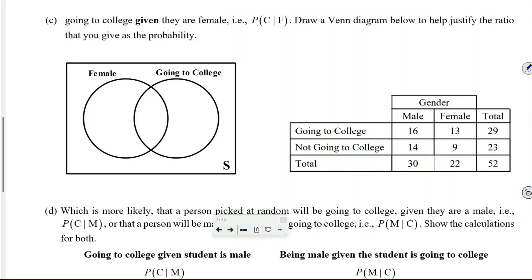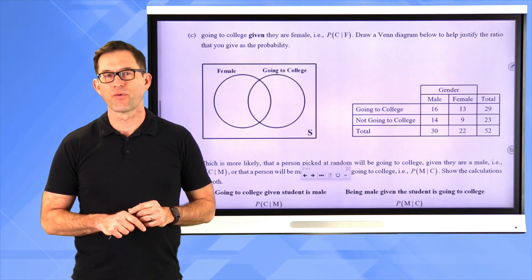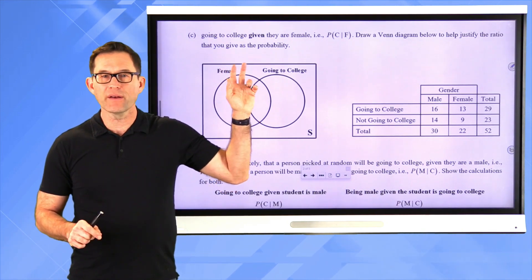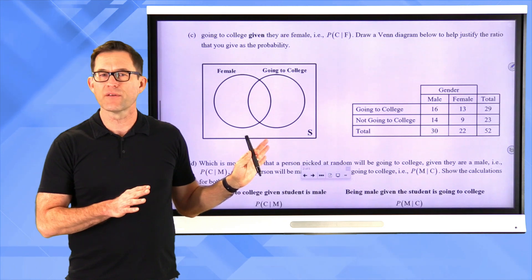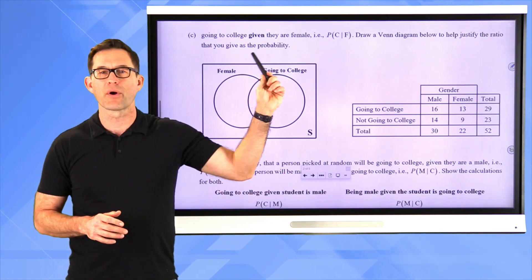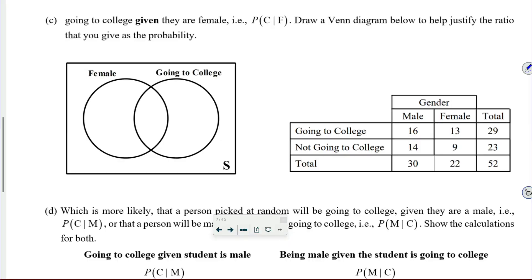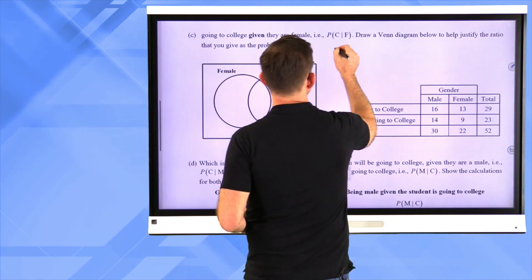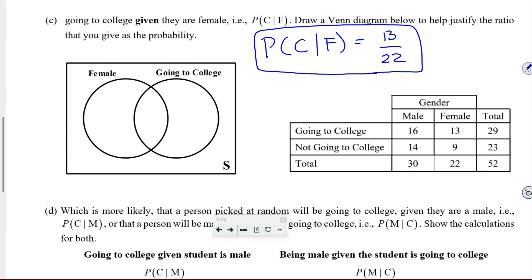Now let's take a look at letter C. Find the probability of going to college given that they are female. Draw a Venn diagram below to help justify the ratio you give as a probability. We want to find the probability that the person is going to college given that they're female. See if you can answer the probability question. If you said the answer is 13 divided by 22, then you already have a good sense for what's going on.